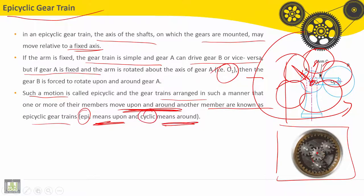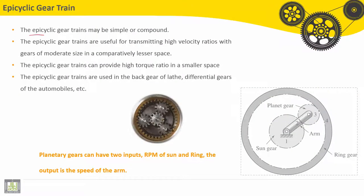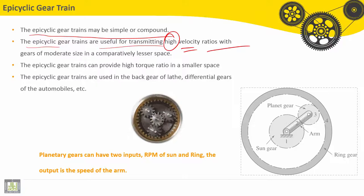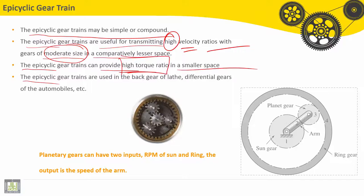The epicyclic gear trains may be simple or compound. The epicyclic gear trains are useful for transmitting high velocity ratio with gears of moderate size in a comparatively lesser space. The epicyclic gear trains can provide high torque ratio in a smaller space. The epicyclic gear trains are used in the back gear of lathes, differential gears of automobiles, etc.